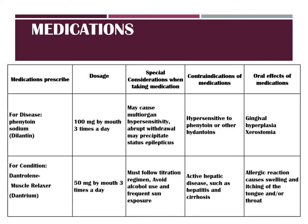For his spinal cord injury, he takes dantrolene, which is Dantrium — 50 mg by mouth three times a day. The special consideration is that he must follow the titration regimen very strictly and must avoid any alcohol and frequent sun exposure. Contraindications include active hepatic disease such as hepatitis and cirrhosis. Oral effects are none; however, there can be some allergic reactions causing swelling and itching of the tongue and throat.